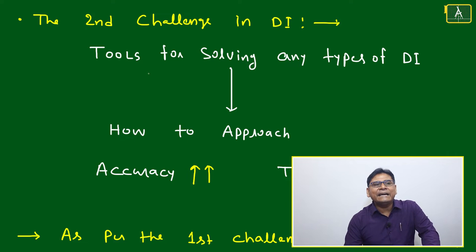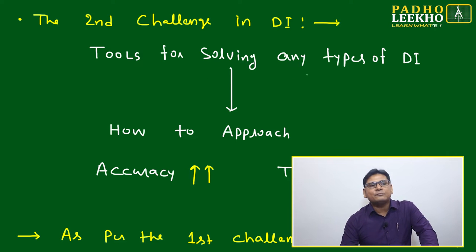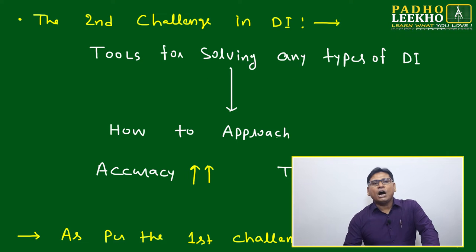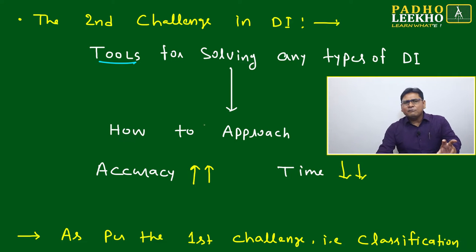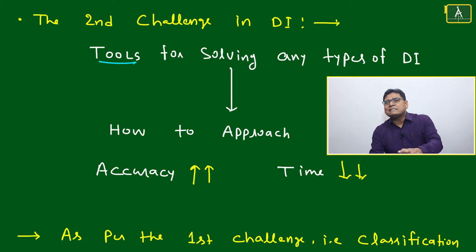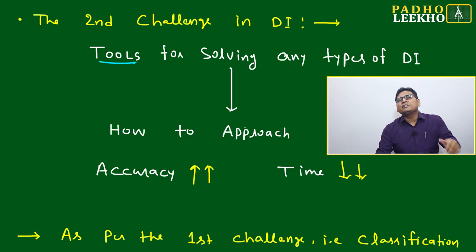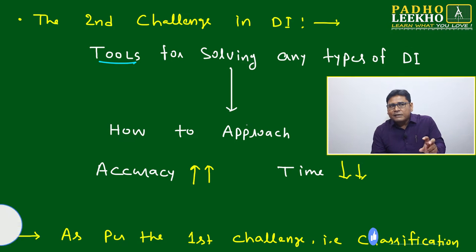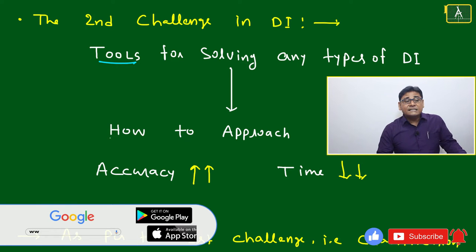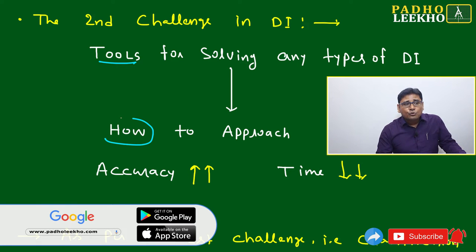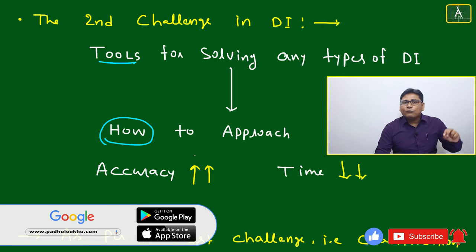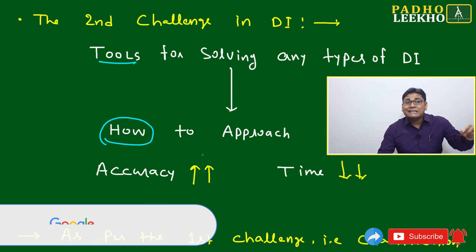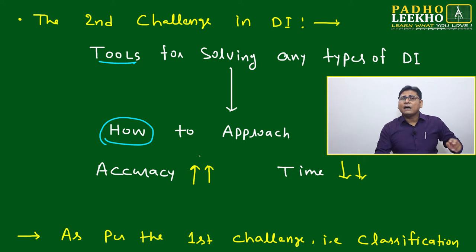The second challenge is DI tools for solving any type of DI. Two factors will be addressed: first, the tools you need to develop to solve any type of DI case slate — for example, if you categorize a case slate as Type 5, which tools should you use. Second, how to approach a particular question — from which point should you begin analyzing the data. That is one of the most important things.